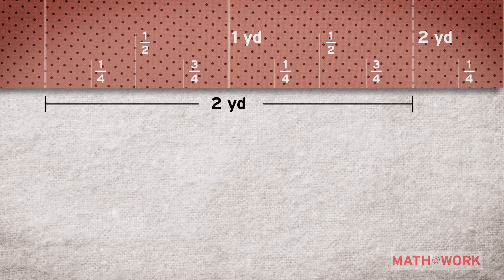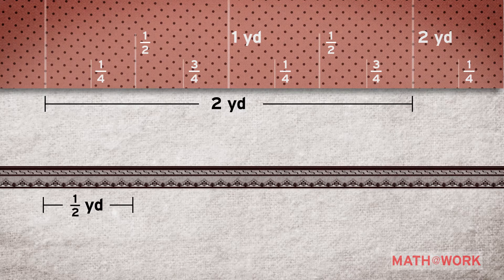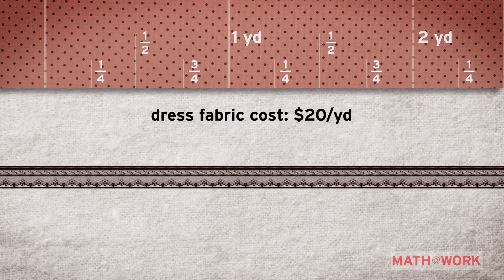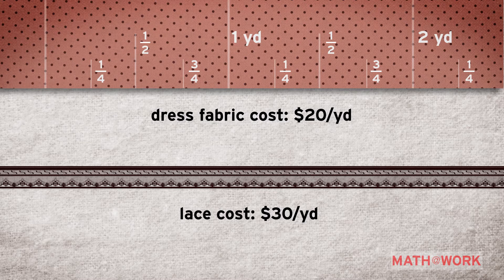The first thing every designer needs to know is the amount of each fabric needed to make a garment. Jessalyn, you think you need a length of the dress fabric that is about two yards, and you also say you need one half yard of the lace. The dress fabric you selected is sold at a unit rate of $20 per yard. The lace is sold at a unit rate of $30 per yard. Both are sold by the one-fourth yard.